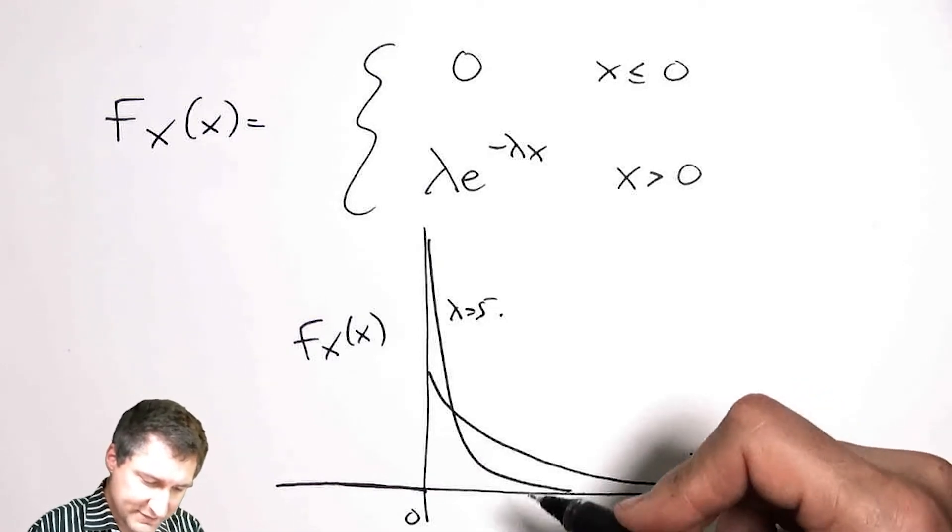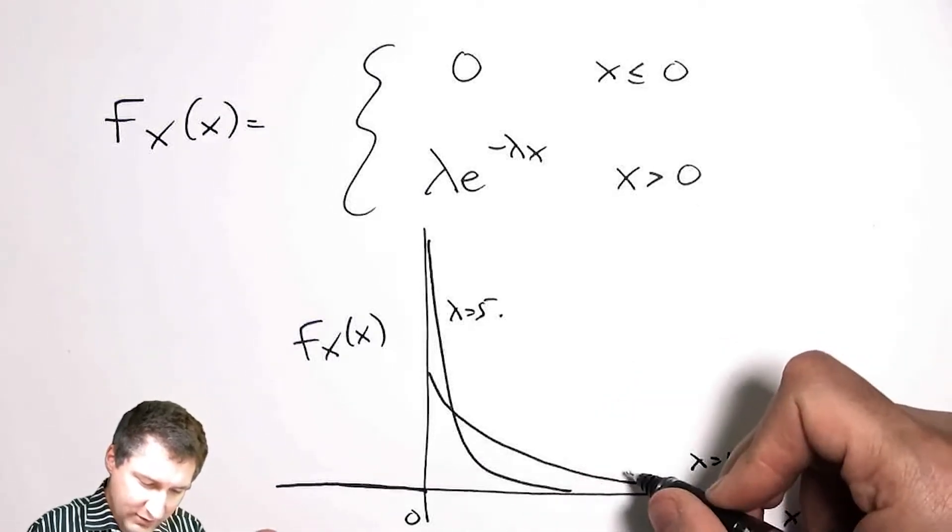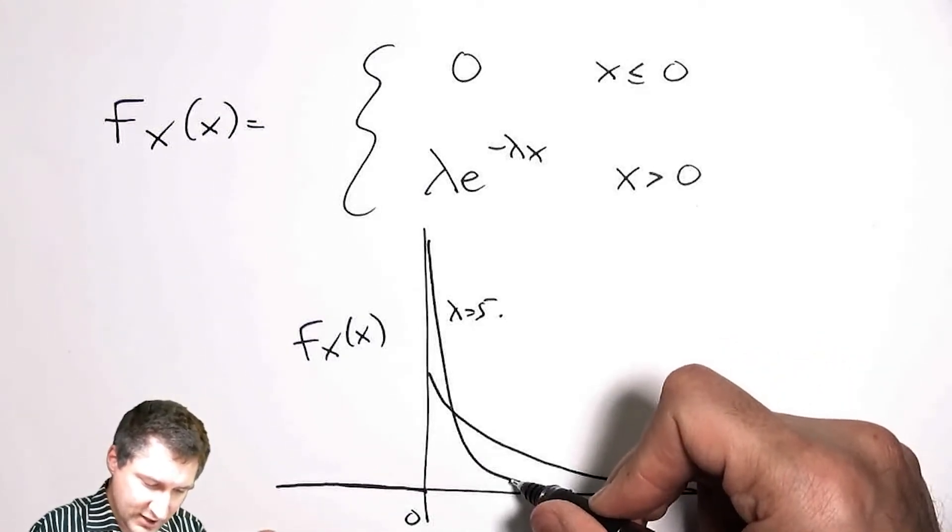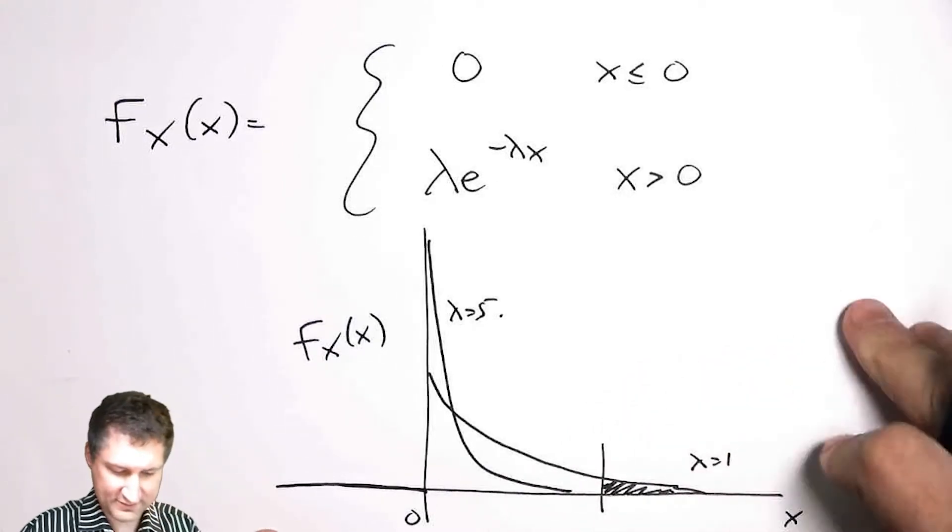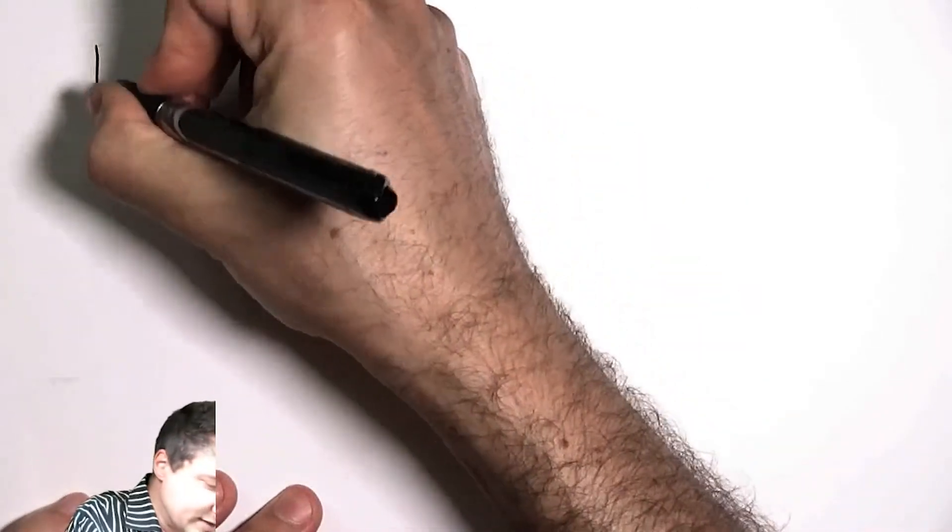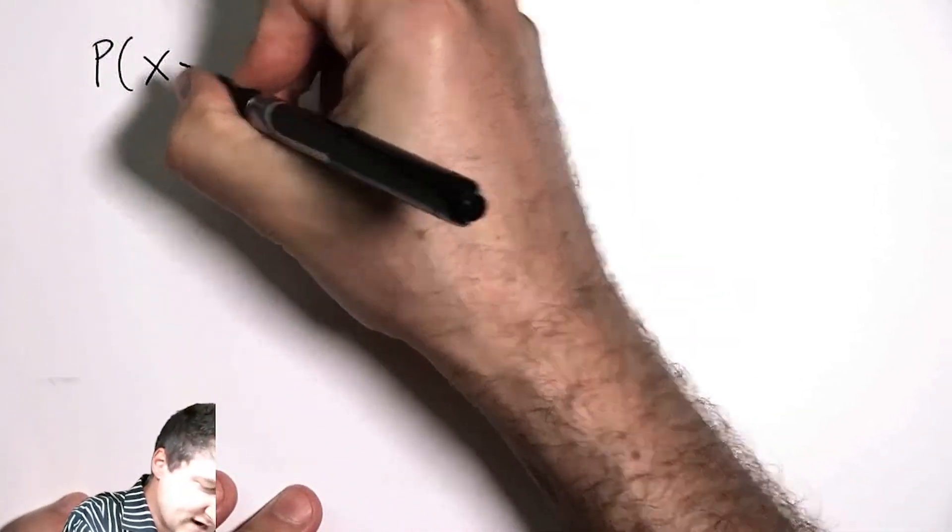One thing that I want to note is that oftentimes we're interested in how much probability is there under the tail of this PDF. To say that a different way, what is the probability that x is greater than some number?